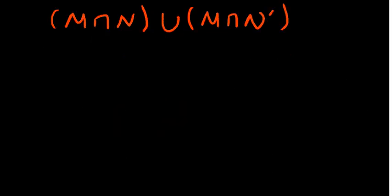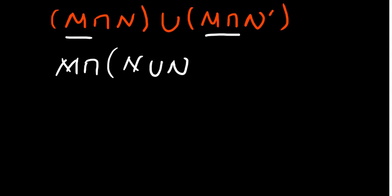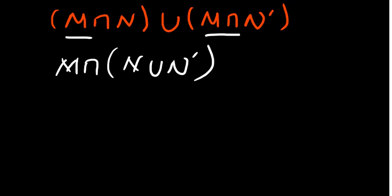For the next one, it's also coming from the basic idea of sets — specifically the distributive law. This time we have M intersection something. The simplest form comes from distributing: M intersection (N union N complement). This is a distributive law — if you multiply this with that, you get what we have on the left, and by that, you get what we have on the right.